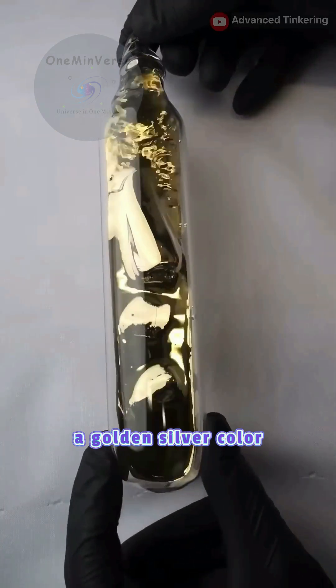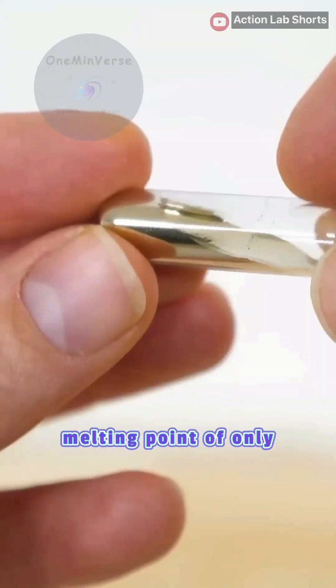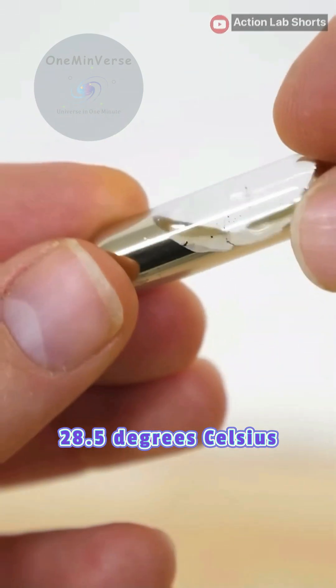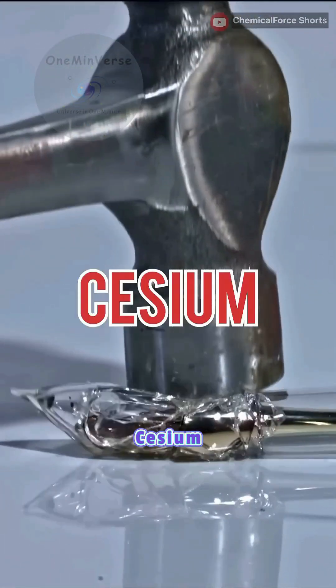A soft metal that has a golden silver color and has a melting point of only 28.5 degrees Celsius. And here it is, cesium.